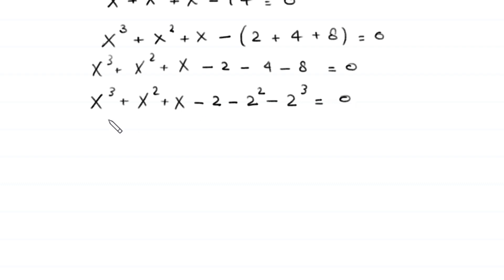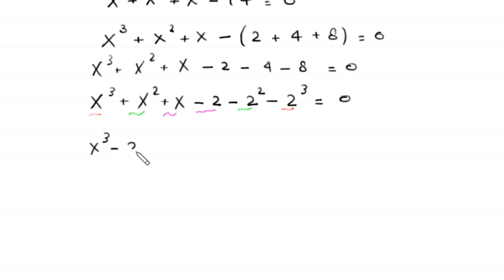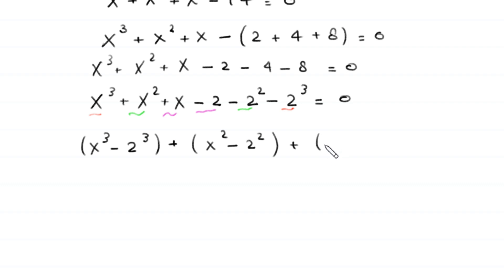We combine the cube terms, the square terms, and the linear terms with their corresponding constants. This gives us: x cubed minus 2 cubed, plus x squared minus 2 squared, plus x minus 2, is equal to 0.